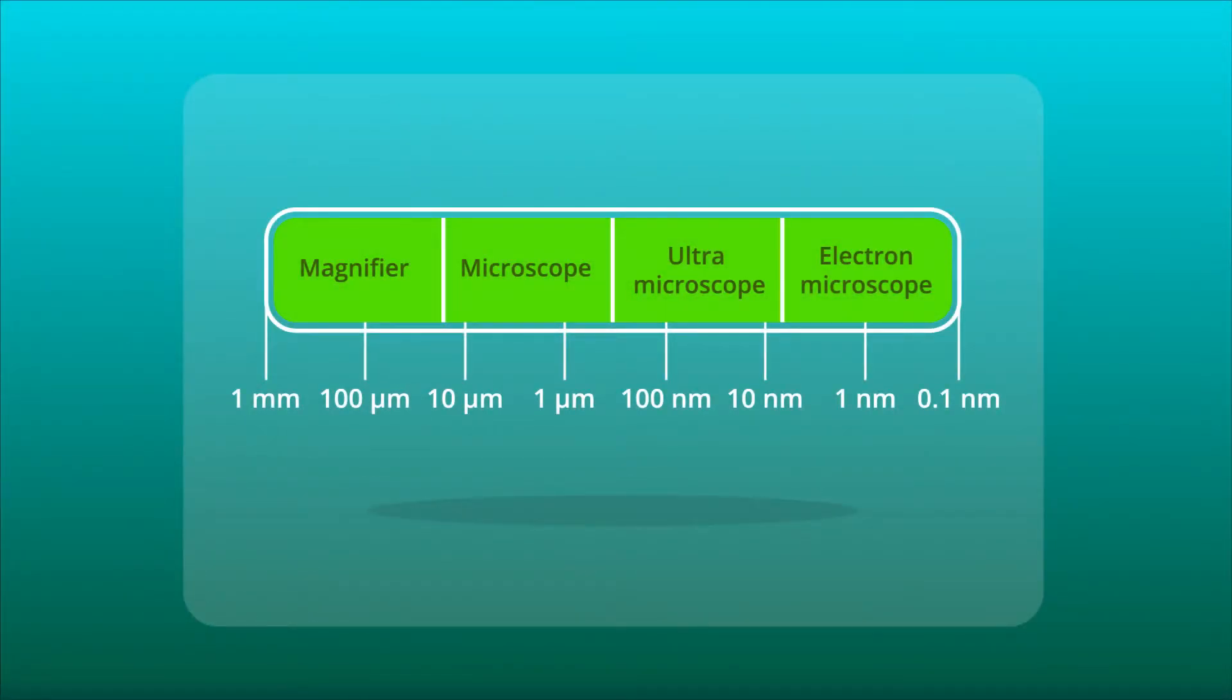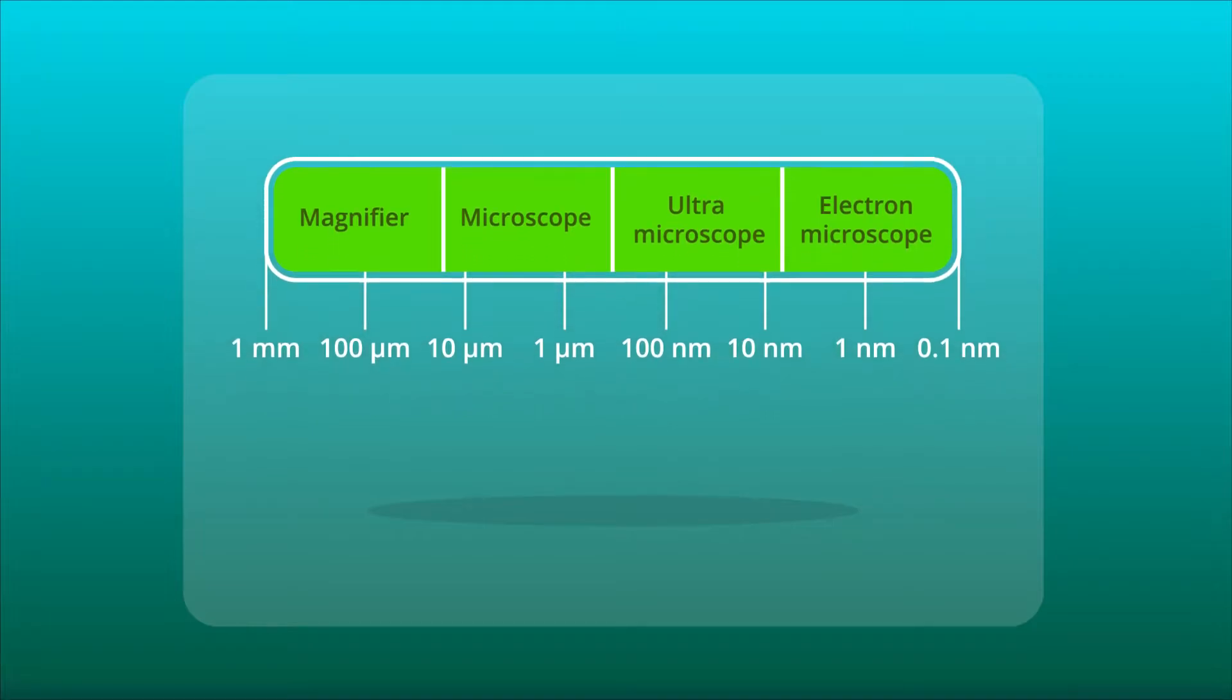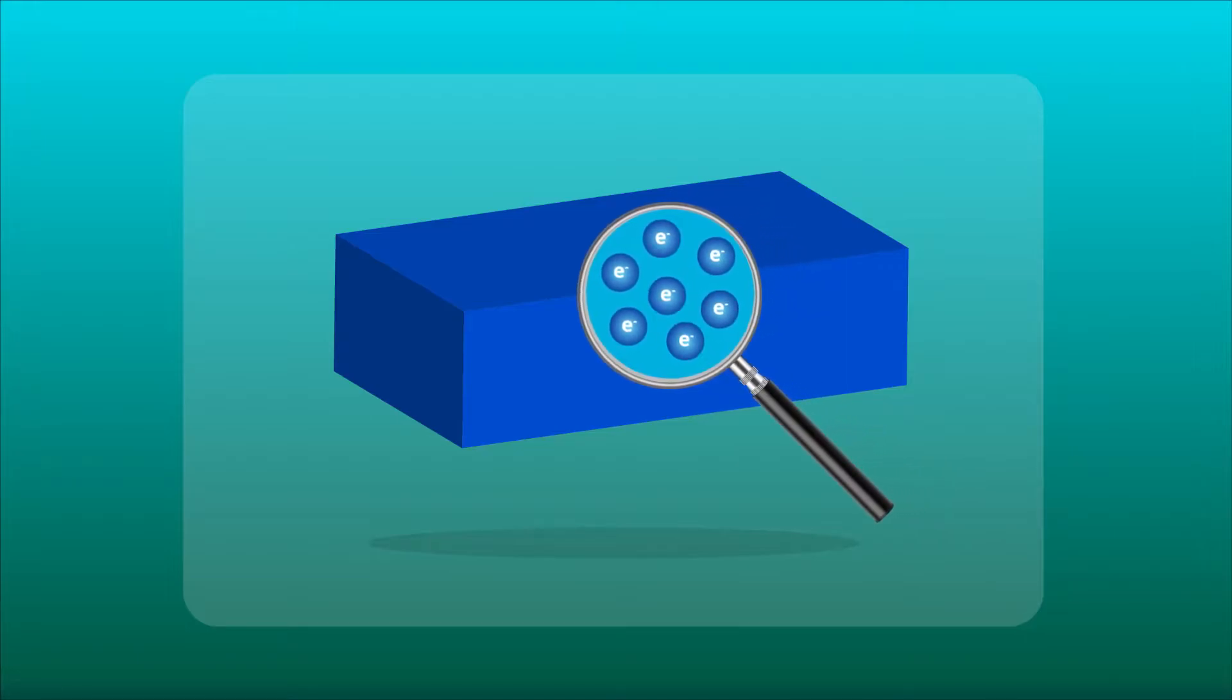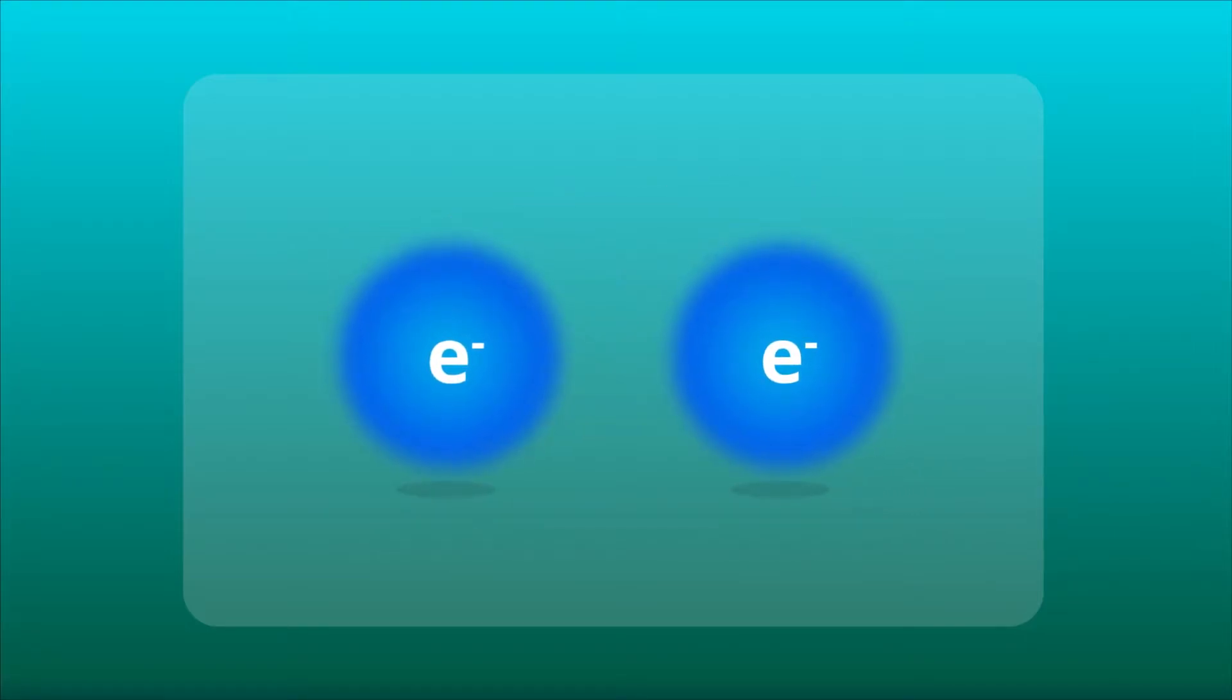Mesoscopic physics is the study of systems ranging in size from nanoscale to microns. A major focus in mesoscopic physics is studying the quantum nature of electrons and associated correlated effects.